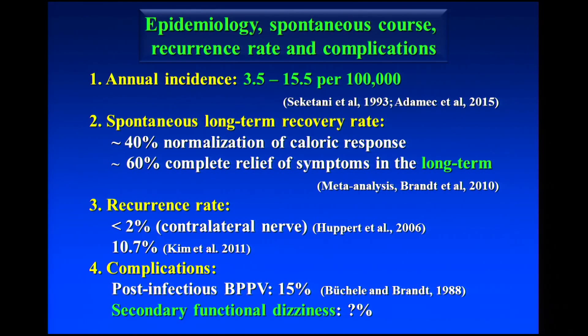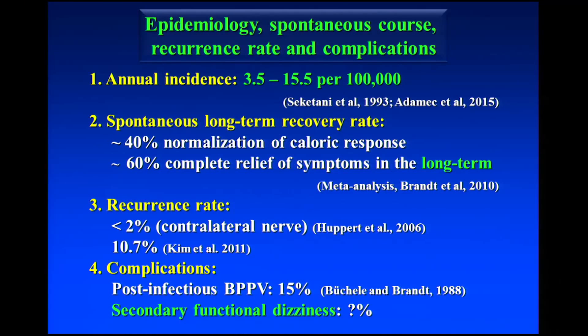The long-term recovery rate is quite good, but today we are focusing on the short-term treatment of symptoms, not the long-term outcome. The recurrence rate is between 2 and 10 percent, and one serious complication is the development of so-called secondary functional dizziness. This in particular occurs if you experience very severe spinning vertigo, and this is something we can reduce with the drug we are going to talk about.